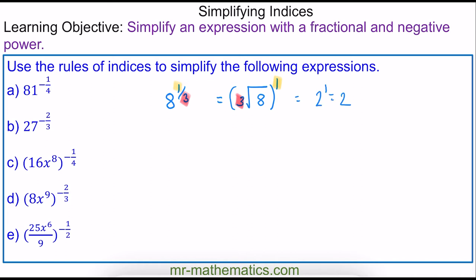Now we can move on to 8 to the power of two thirds. Again we're finding the cube root of 8, but this time we're raising it to the power of 2, because 2 is now our numerator. We know the cube root of 8 is 2, and 2 squared is 4.